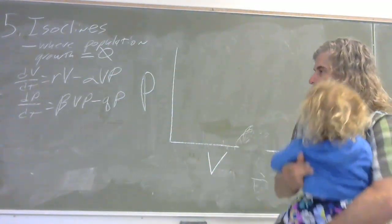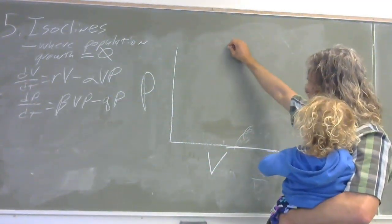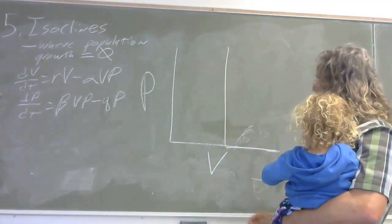And of course, that is of great interest to us because if we're trying to increase a population, then we want to know where it's going to go, where the population would be positive. So what I'm going to do here is I'm going to draw an isocline. I'm going to draw it for the prey here, for the victims.